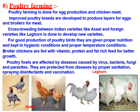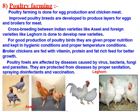Poultry farming is done for egg production and chicken meat. Improved poultry breeds are developed to produce layers for eggs and broilers for meat. Cross-breeding between Indian varieties like Aseel and foreign varieties like Leghorn is done to produce new varieties. For good production, poultry birds are given proper nutrition, kept in hygienic conditions with proper temperature maintained. Broiler chickens are fed with vitamins, proteins and fat-rich food for better growth. Poultry fowls are affected by diseases caused by viruses, bacteria, fungi and parasites, and are protected by proper sanitation, spraying disinfectants and vaccinations.